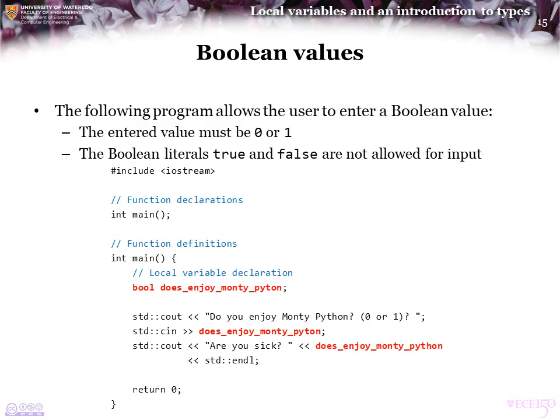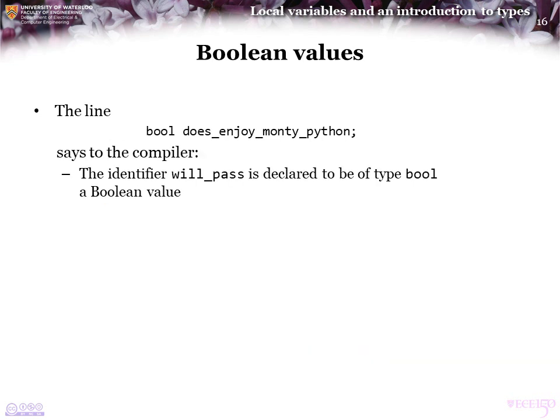The following program allows the user to enter a Boolean value. The Boolean literals are true and false, but we can't use those here directly. Instead, the user must enter either a 0 or 1, so we will prompt the user accordingly. The line 'bool does_enjoy_monty_python' says to the compiler that the identifier does_enjoy_monty_python is declared to be of type bool — that is, a Boolean value.